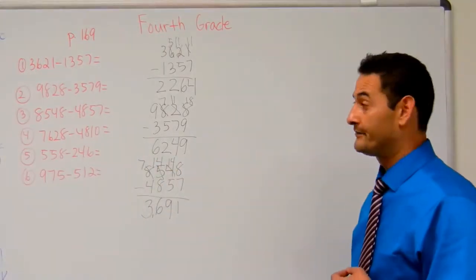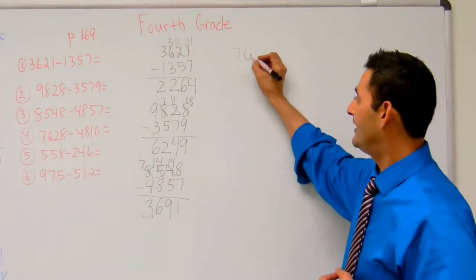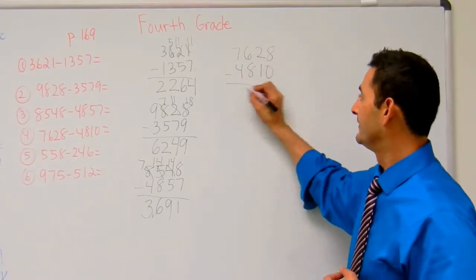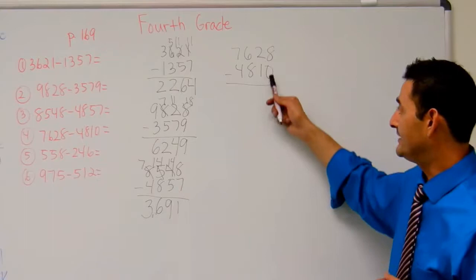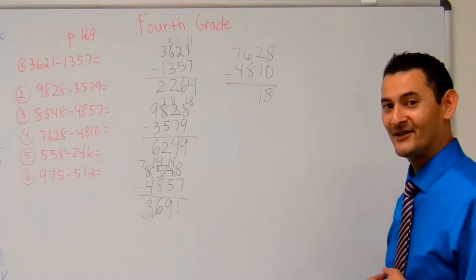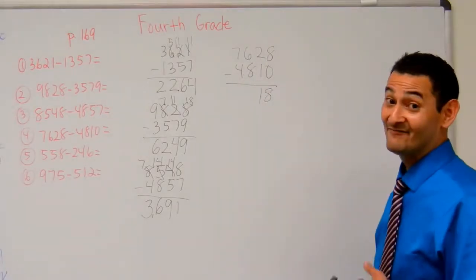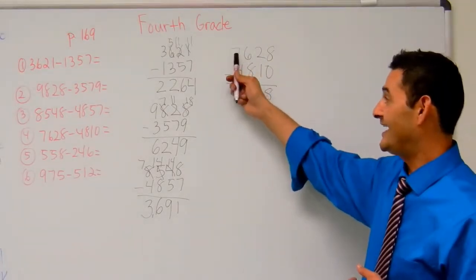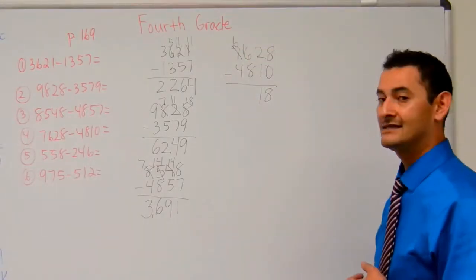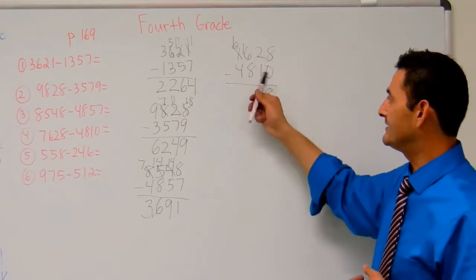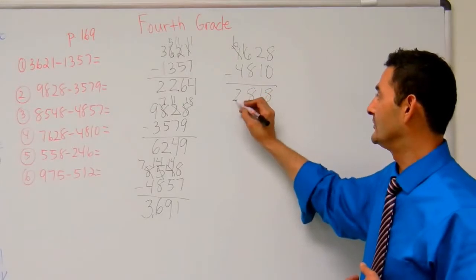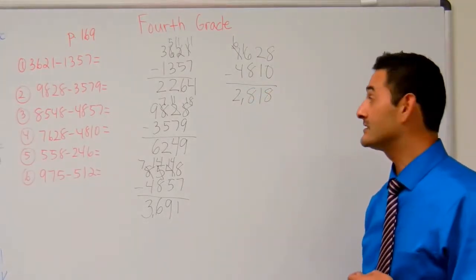Now let's take a look at number 4. I have 7,628 minus 4,810. 8 minus 0 — that's going to be 8. 2 minus 1 — that's going to be 1. So far so good, right? 6 minus 8 — I can't do that. I'm going to have to borrow 10 100's from the 1,000's place. That will become a 6, and that will become 16. 16 minus 8 — that's 8. And then the 1,000's place: 6 minus 4 is 2. So the answer is 2,818.